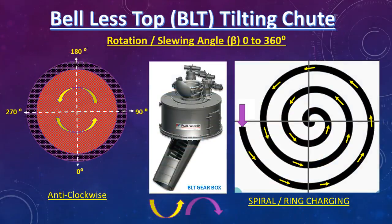What is spiral or ring charging? With continuous 360-degree rotation of the tilting shoot, alpha angle gradually changes as per the operator's choice. Burden material is discharged through the tilting shoot in ring or spiral mode of charging. Ring changes are done with the help of alpha angle changing, meaning both movements occur simultaneously. Beta angle continuously moves 360 degrees while alpha angle changes after a defined number of rotations, normally from wall to center.